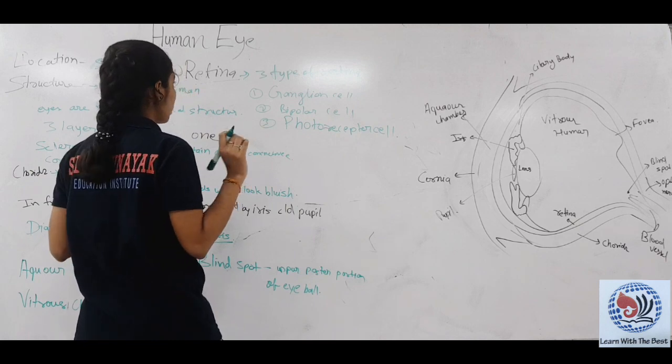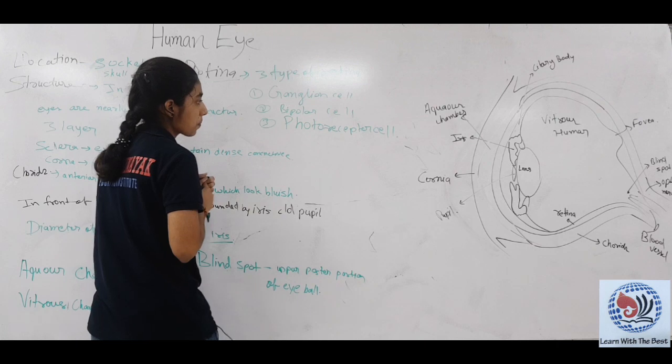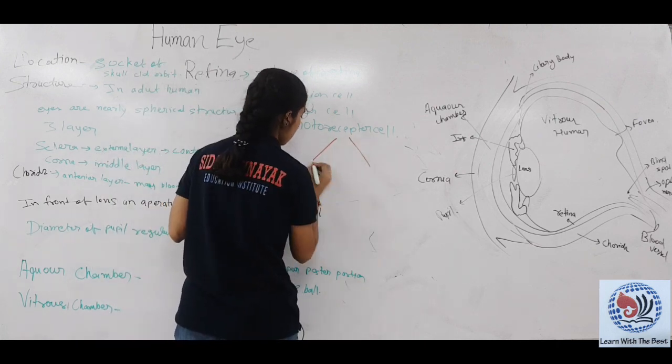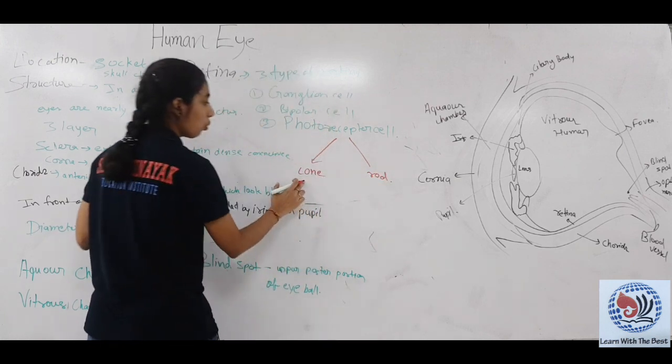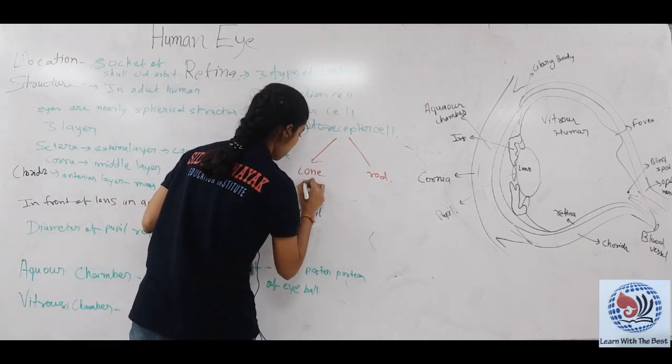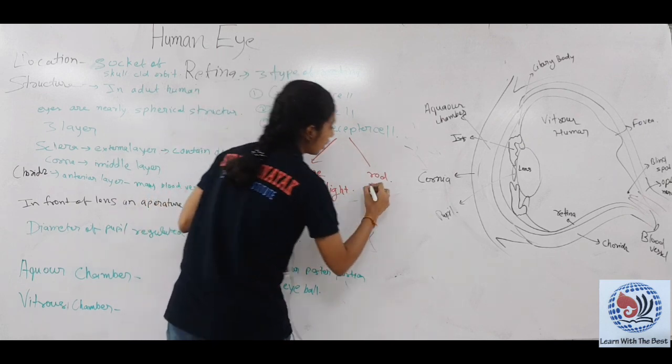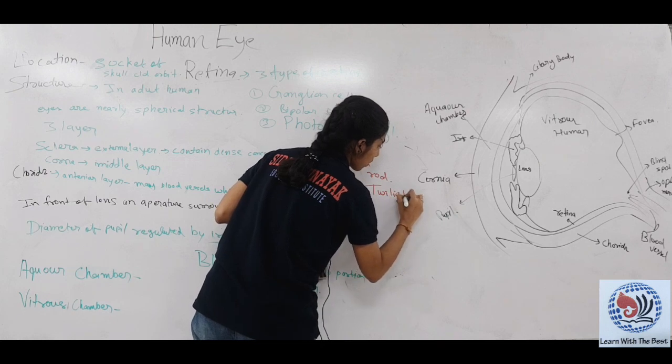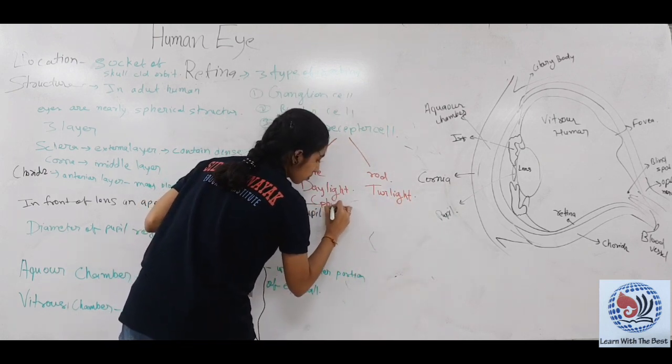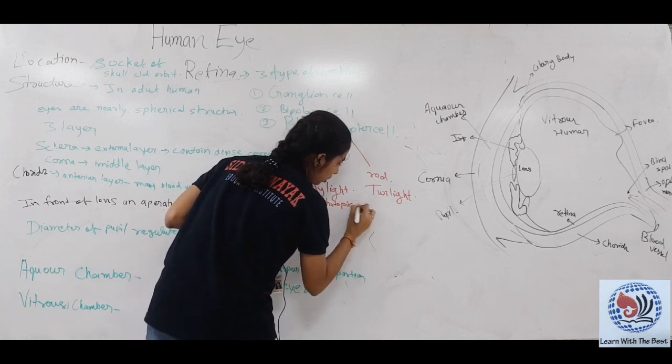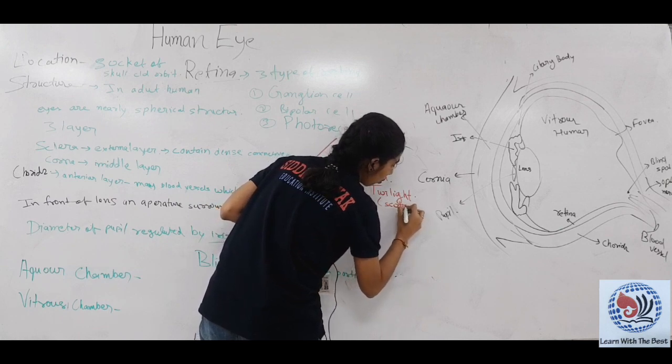Photoreceptor cells are two types: cone and rod. Cone works in daylight, which is photopic vision. Rod works in twilight, which is scotopic vision.